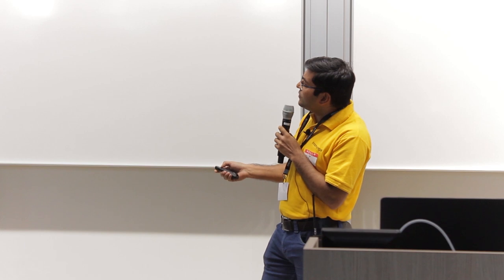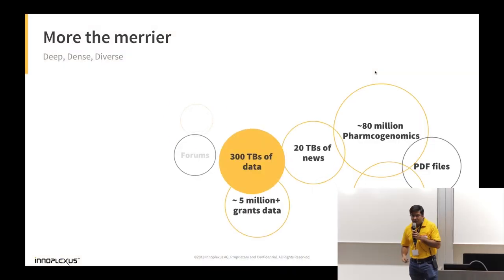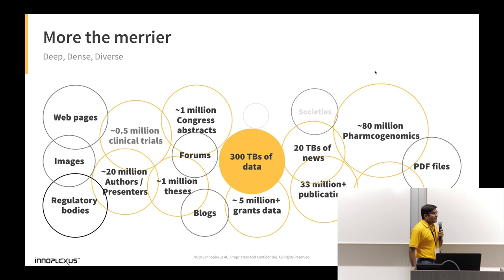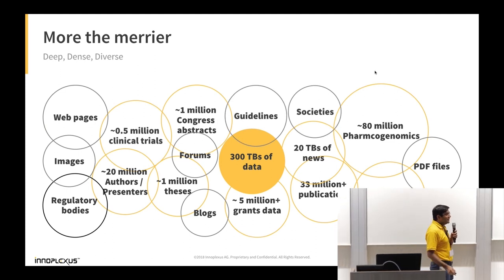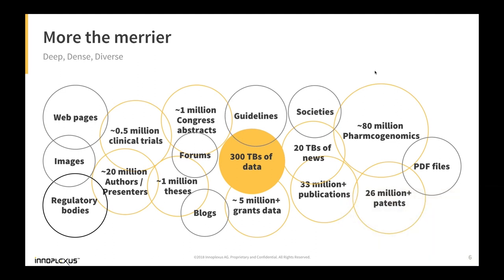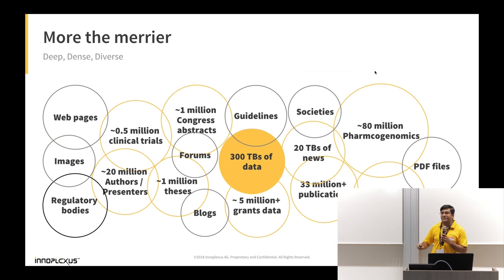As of now, more than 300 terabytes of data. Everything you name it — if there is anything publicly available and related to life sciences, we already have it or we will have it by tomorrow. Millions of publications, abstracts, web pages, hospital web pages, pharmaceutical websites — everything.